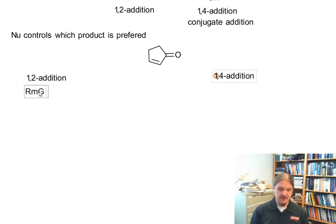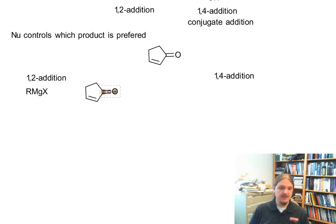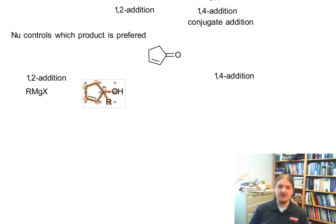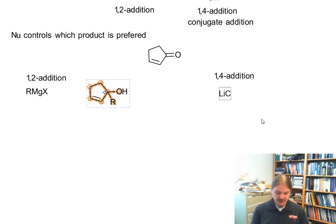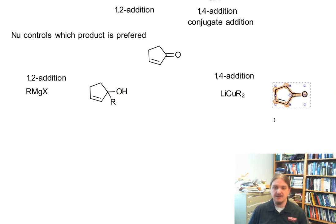I'm going to start with the Grignard reagent. The Grignard reagent prefers 1,2 addition, so Grignard reagents would react with my compound here and go straight for the carbonyl group as we would expect, giving the 1,2 addition product. The corresponding lithium dialkyl cuprate, or Gilman reagents, tend to go for the 1,4 position, so the product has nucleophilic attack at the beta position rather than at the carbonyl group.